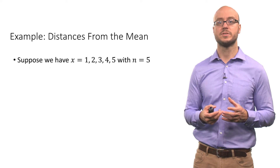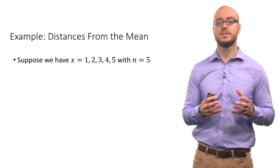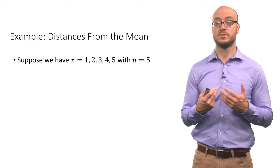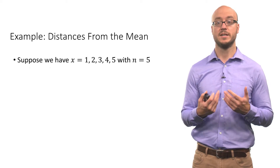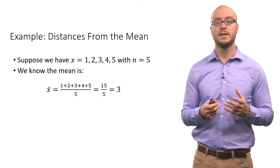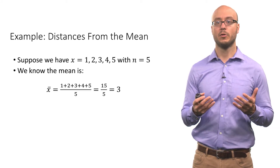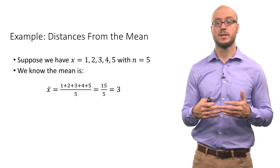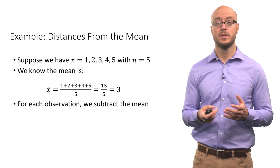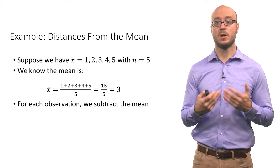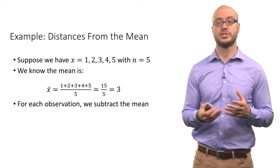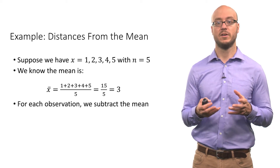Suppose we have a set of observations consisting of the numbers 1, 2, 3, 4, and 5. The sample size is 5. The mean is simply adding up all those values and dividing by the sample size: 15 divided by 5, or 3. So X-bar, the mean, is 3. That's the typical observation in this set.